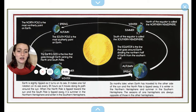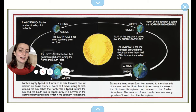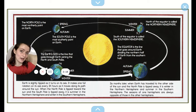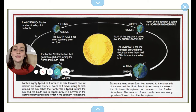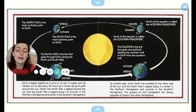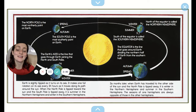So here we have the earth — it's spring here and autumn over here. The equator is the line that goes around the earth dividing the northern half from the southern half. The northern half is up top and the southern half is down below — think North America, South America. South of the equator is called the southern hemisphere, and north of the equator is called the northern hemisphere. The north pole is the most northerly point on earth and the south pole is the most southerly point on earth. The earth's axis is the line that goes through the earth joining the north and south poles.